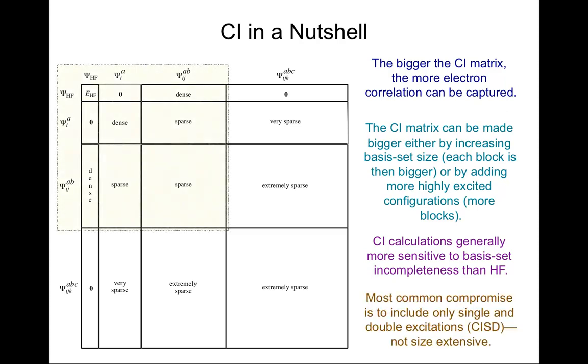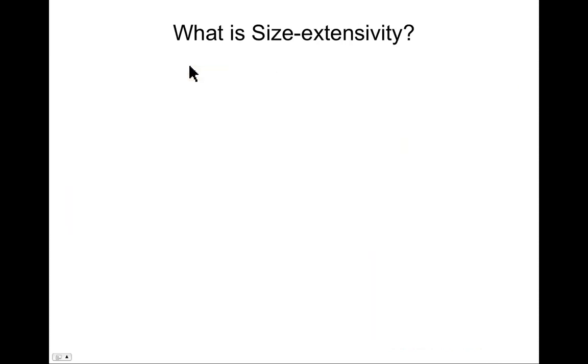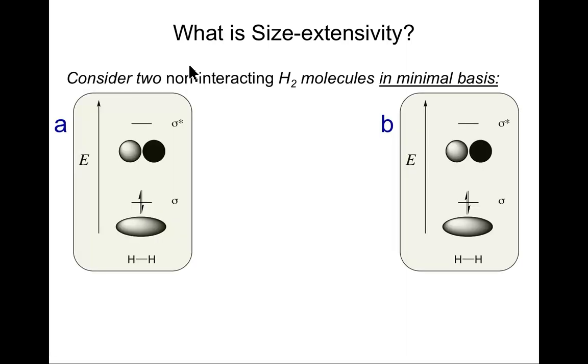Unfortunately, experience has shown that CI calculations, CI is configuration interaction, are more sensitive to basis set incompleteness than Hartree-Fock calculations. So that implies if you're going to do a correlated calculation, you really ought to use a bigger basis set in order to capture the correlation energy more efficiently. And so because of all those concerns, what people will tend to do is truncate their level of excitation, and a typical truncation would be at the singles and doubles level. And that gives you this reduced matrix that is used in solving the secular determinant. But it also introduces a problem, and that problem is known as size extensivity.